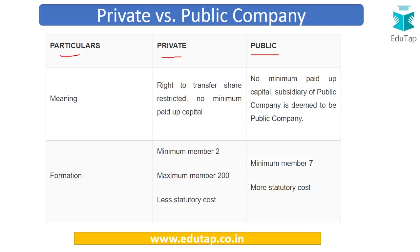In a private company, the transfer of shares is restricted — shares can be transferred only to a limited set of persons and cannot be freely traded in the market. In a public company you are free to deal with securities as you wish. Regarding minimum paid-up capital, this restriction previously required private companies to maintain one lakh paid-up capital and similarly for public companies, but now this restriction has been eliminated — no minimum paid-up capital is required.